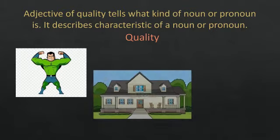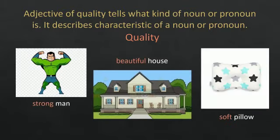Strong man, beautiful house, soft pillow. Here, soft, beautiful and strong are the qualities of the nouns: pillow, house and man respectively.